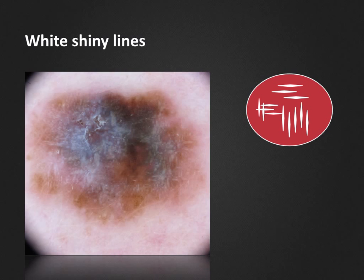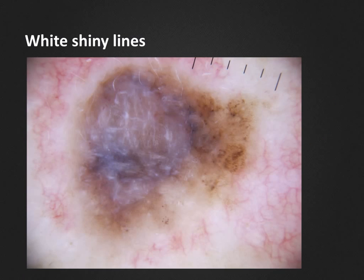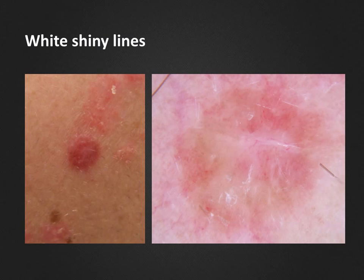Here is a typical example of white shiny lines in an invasive malignant melanoma. In this case, the crystalline structures can be seen within the blue-white veil but also in areas of brown pigment network at the periphery. Here is another example of an invasive melanoma exhibiting white shiny lines mainly within the area of the tumor with greater thickness. White shiny lines can also be seen in Spitz nevi; another clue to a melanocytic lesion in this case are the dotted vessels that can be seen apart from the crystalline structures.